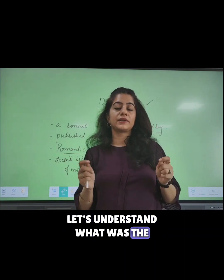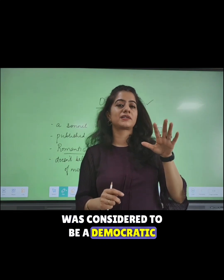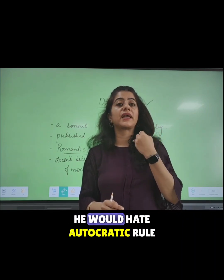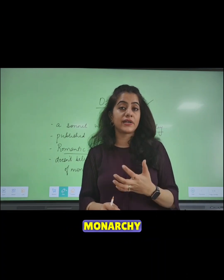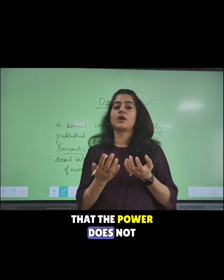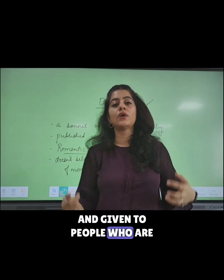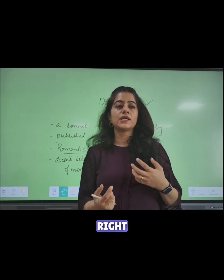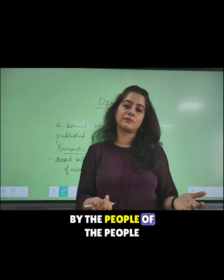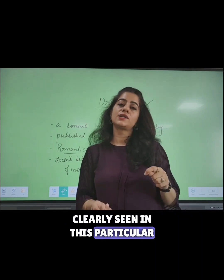P.B. Shelley was always considered to be a democratic poet. He hated autocratic rule, the rule of monarchy, totalitarianism, and absolutism. He believed that power should not be given to just one person or authority — it should always be distributed and given to the people responsible for its creation. He believed in the power of people, and a reflection of this ideology will be clearly seen in this sonnet.